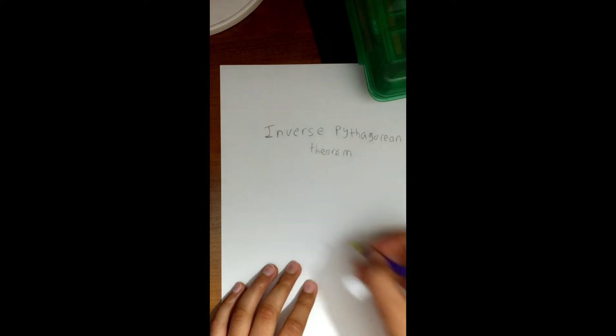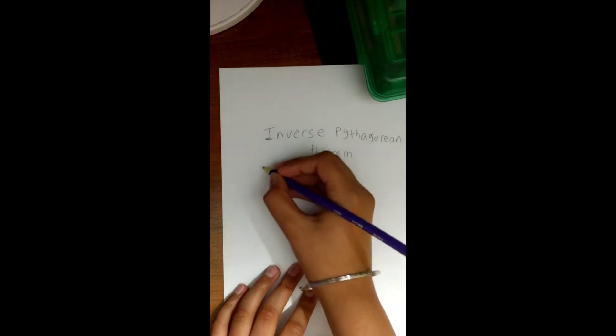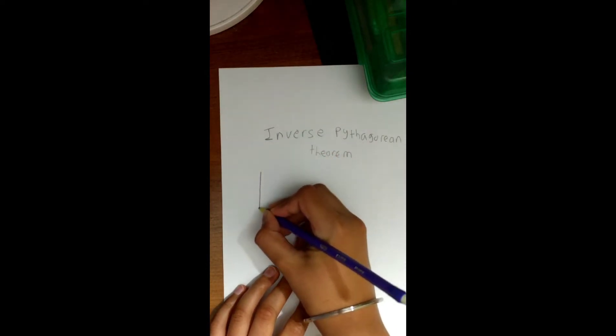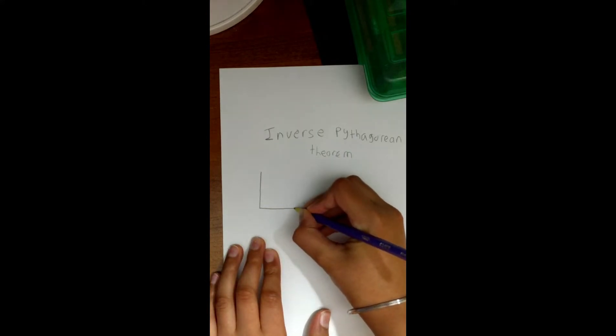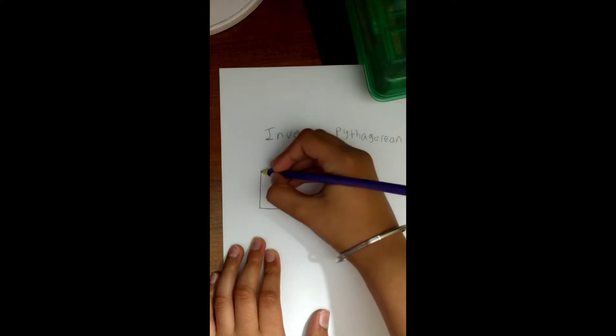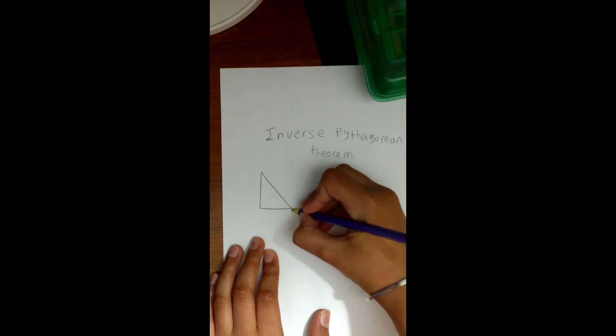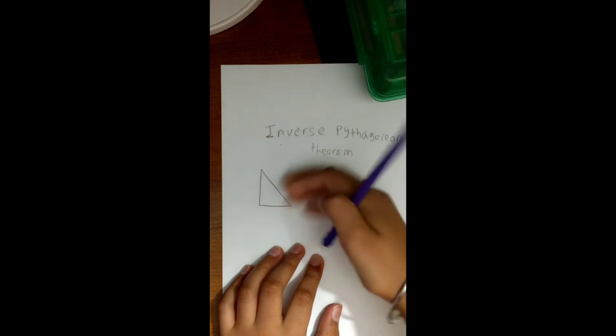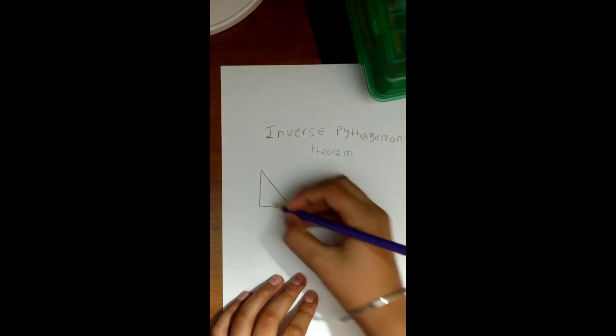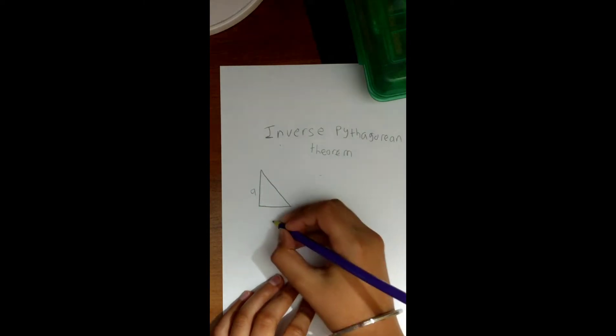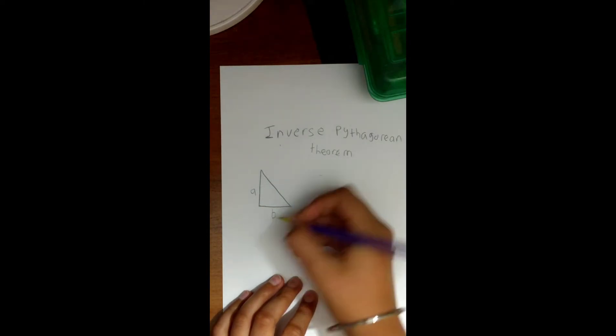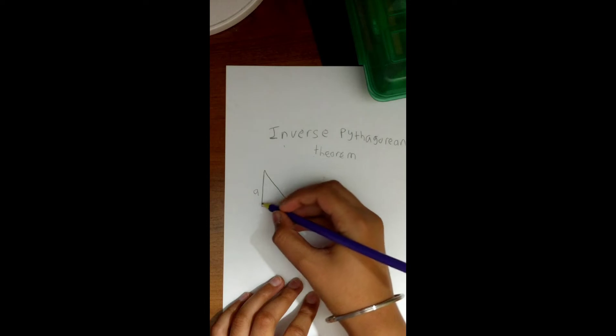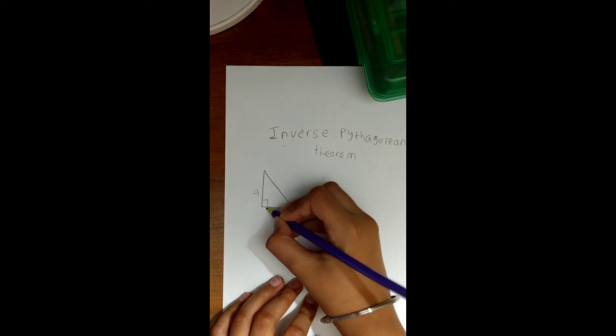So let's write it down. The inverse Pythagorean theorem. Basically, this theorem says that if I have a triangle, a right triangle, let me draw that. I have this right triangle.